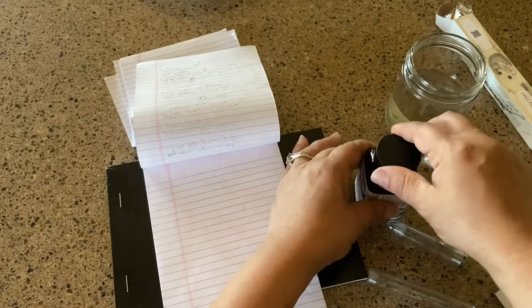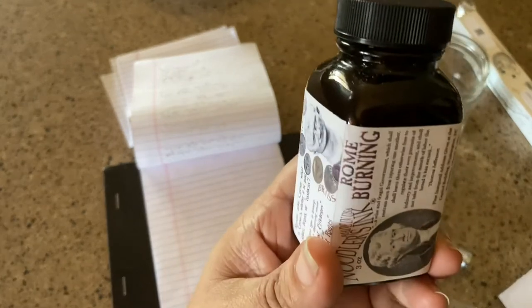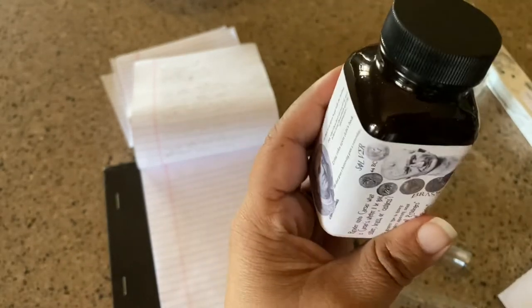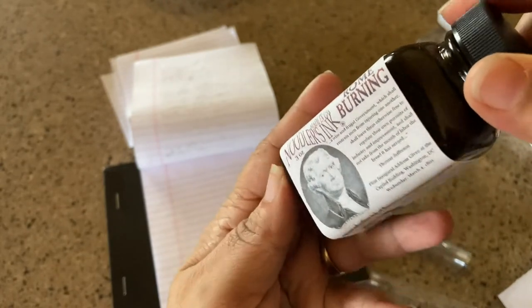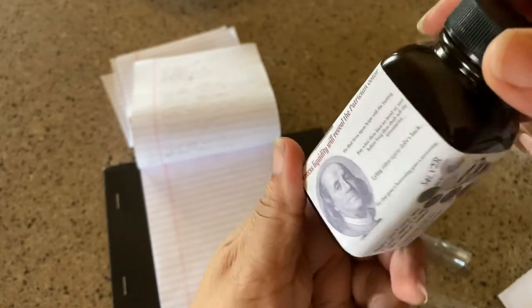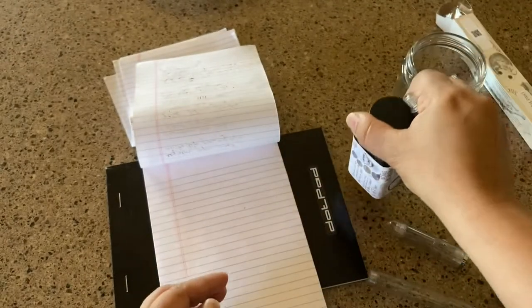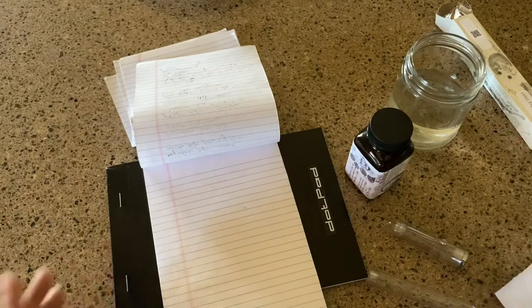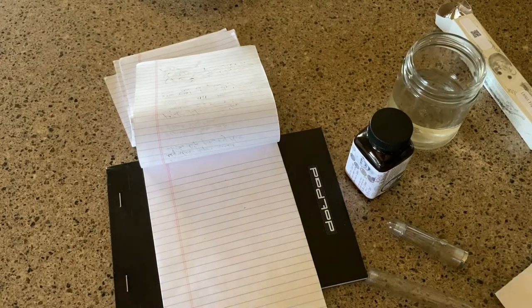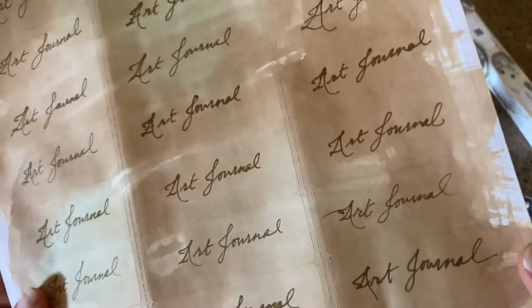And then I also have in my hands Rome Burning by Noodler's. It's just the coolest bottle, I think. It has all these presidents on there. And I wanted an ink that had kind of that sepia color to it because I've been doing some junk journaling. I'm making some of these labels that say art journal on it, and I wanted it all to look very old-fashioned.